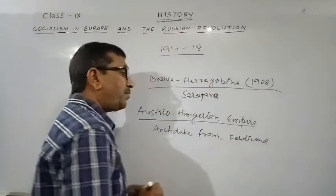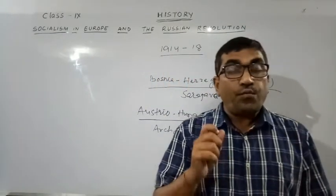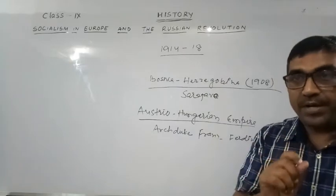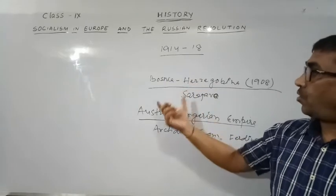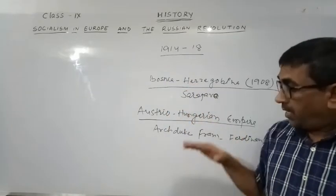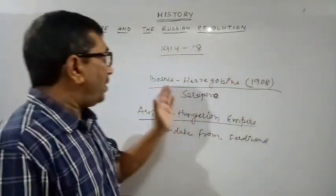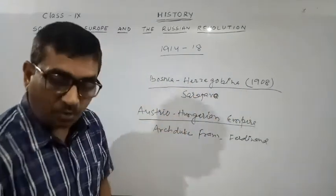Who was Archduke Franz Ferdinand? He was the Archduke of Austria who was assassinated on 28th June 1914. The Archduke Franz Ferdinand was the Prince of the Austro-Hungarian Empire. This Prince had visited the capital city of Bosnia-Herzegovina, Sarajevo.